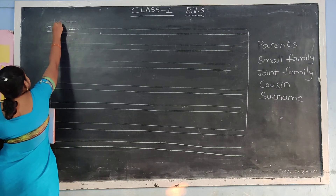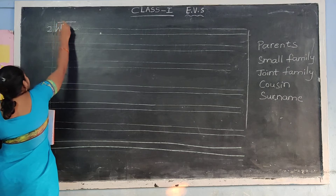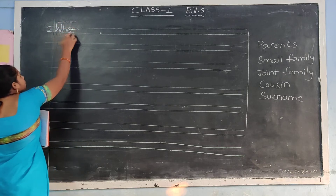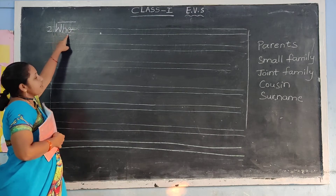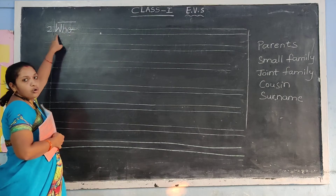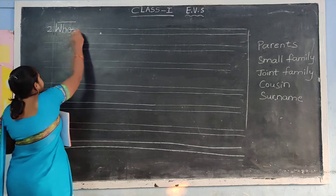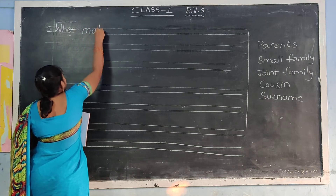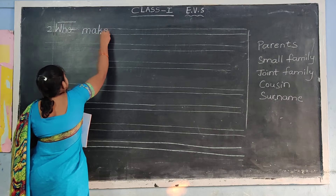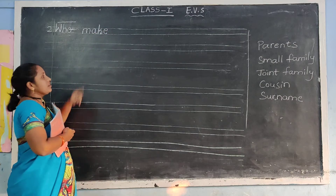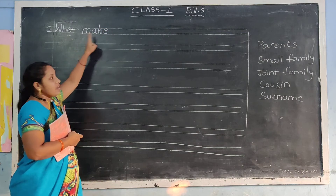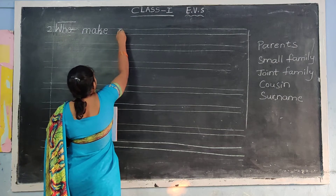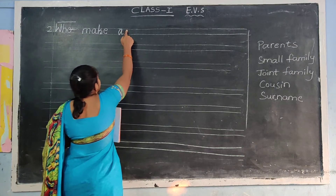Capital letter W-H-O — who? Finger down. M-A-K-E — make. Finger down. M-A-K-E. Finger down. M-A-K-E.